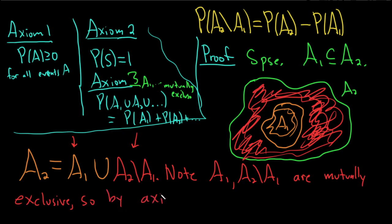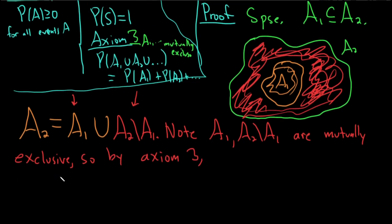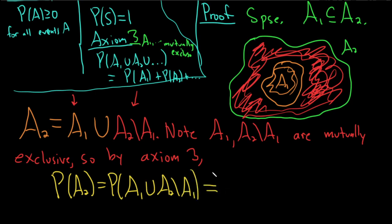So by axiom 3, let's see what we can do. So P of A2 is equal to P of this union: A1 union A2 set minus A1. And so axiom 3 now allows us to do this. This is P of A1 plus P of A2 set minus A1. And again, this is because they're mutually exclusive, which allows us to do that with axiom 3.